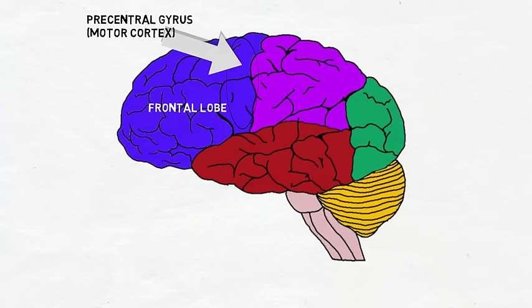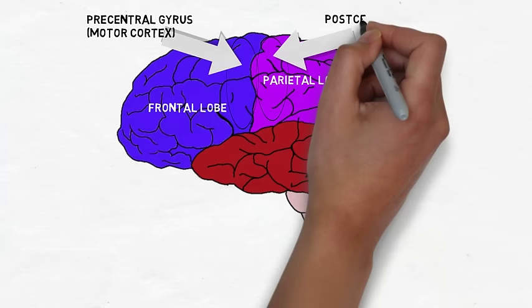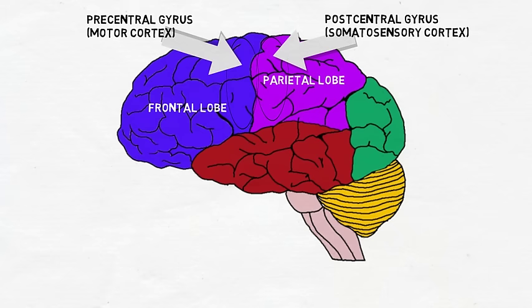The parietal lobes are important for processing of sensory information and are involved in attention and our representation of the space around us. This area in the parietal lobe, the postcentral gyrus, contains the primary somatosensory cortex and is where the sense of touch is processed.